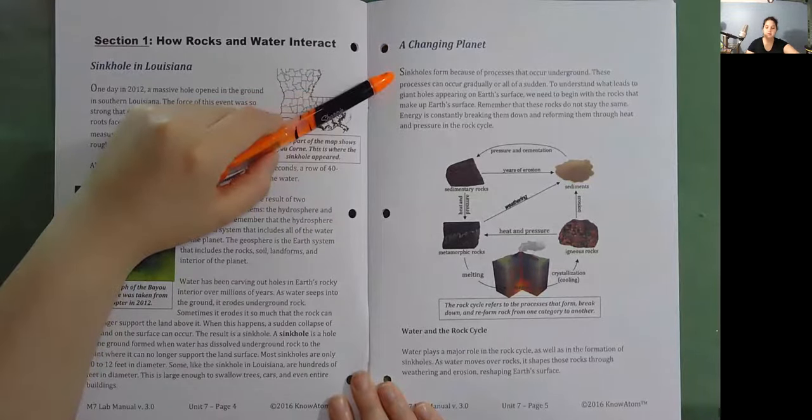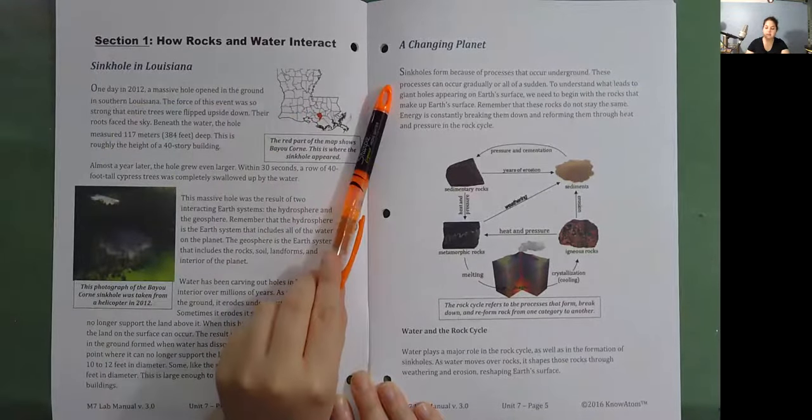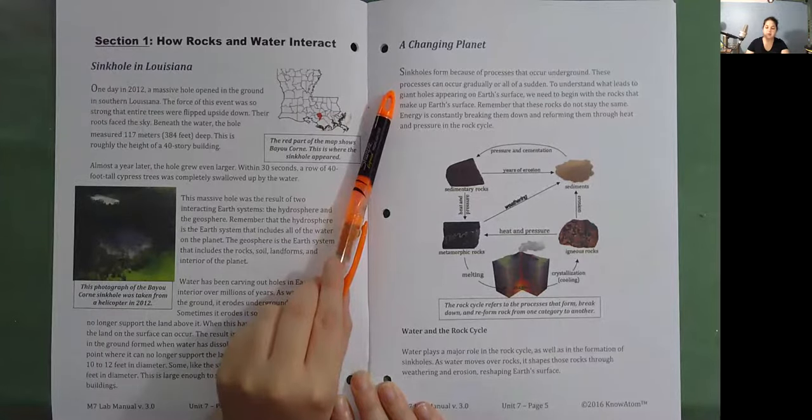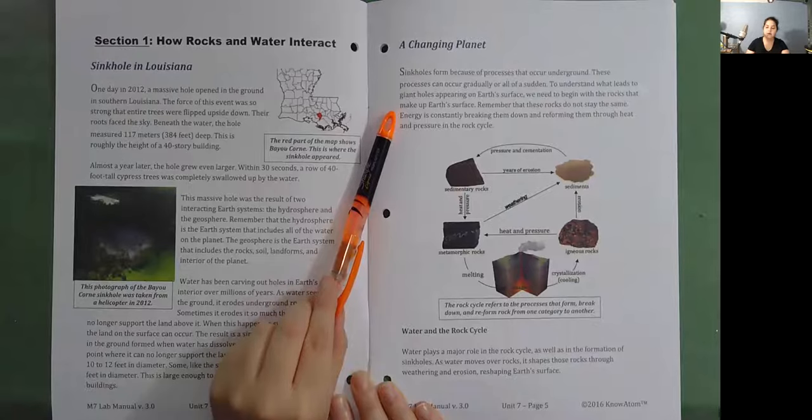A changing planet. Sinkholes form because of processes that occur underground. These processes can occur gradually or all of a sudden. To understand what leads to giant holes appearing on Earth's surface, we need to begin with the rocks that make up Earth's surface. Remember that these rocks do not stay the same. Energy is constantly breaking them down and reforming them through heat and pressure in the rock cycle.